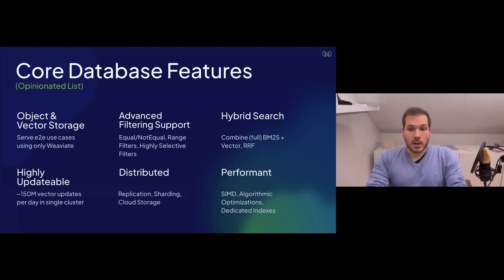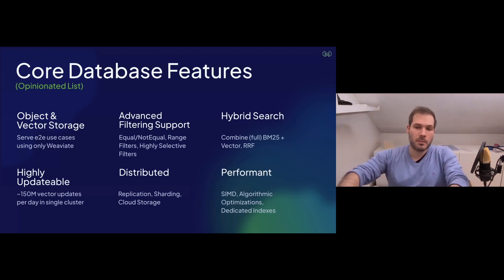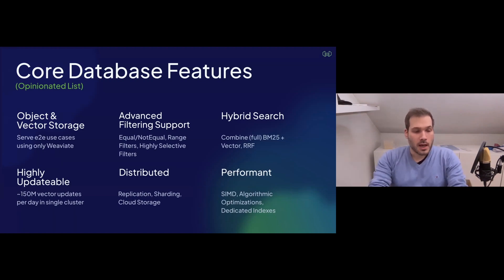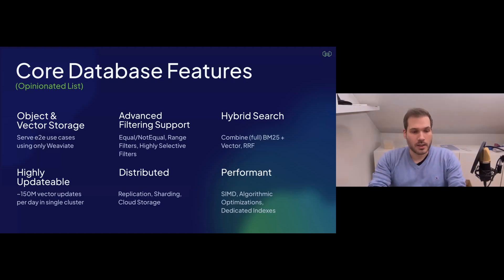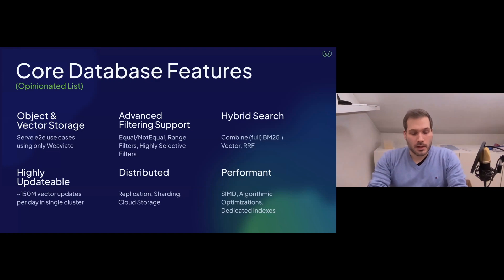You can do hybrid search — combining traditional BM25-based search with vector-based search, mixing results using reciprocal rank fusion, getting better results than either alone. Weaviate is also very highly updatable, so you can use it with fresh data that constantly changes. We have one use case with 150 million vector updates in a single day in a cluster. For a normal database that may not be a lot, but constantly updating indexes like IVF or HNSW involves a lot of build costs, and it's quite a challenge to do at scale.